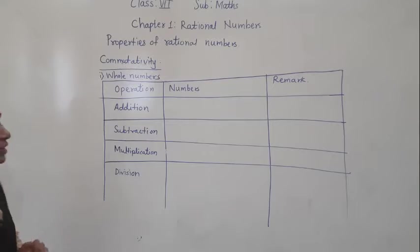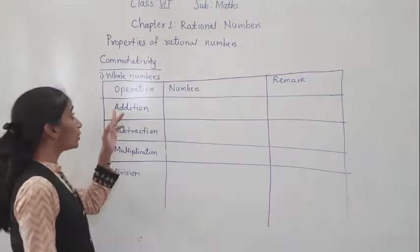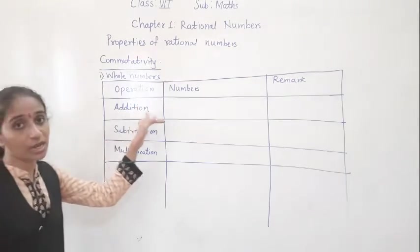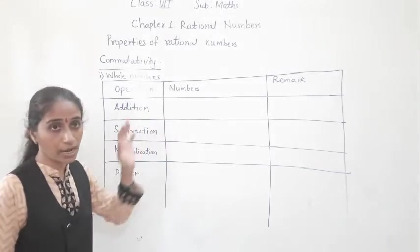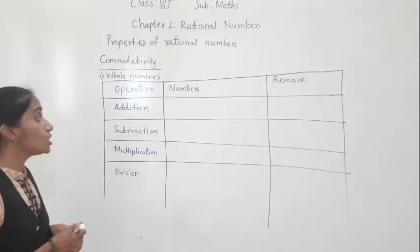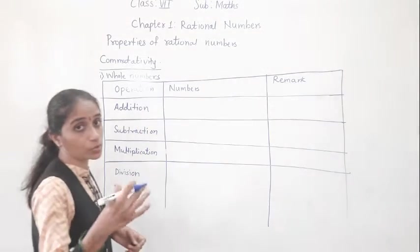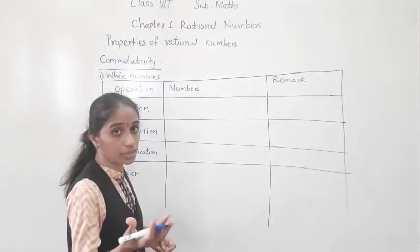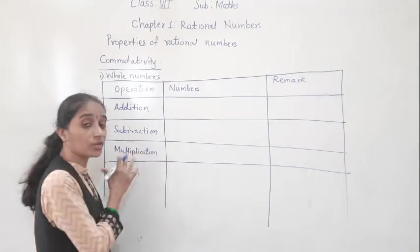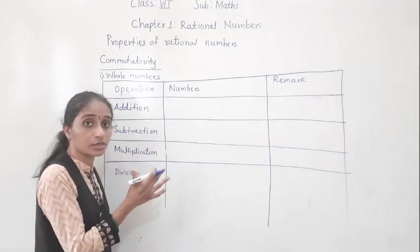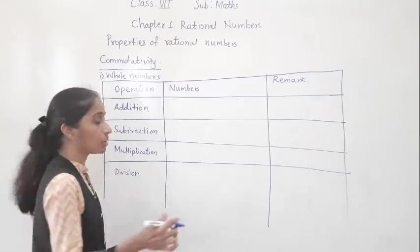Now, what is commutative property? In commutative property, the first operation is addition. Suppose A plus B is equal to B plus A. This property ensures that when you change the order, the answer remains the same.